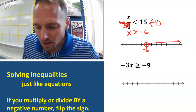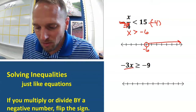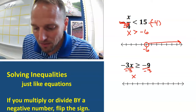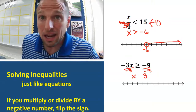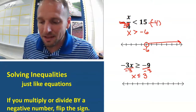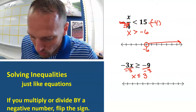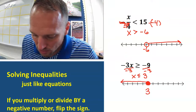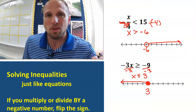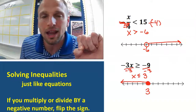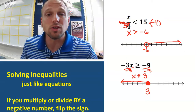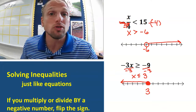Negative 3X is greater than or equal to negative 9. Divide both sides by negative 3: negative 9 divided by negative 3 is positive 3. But since we divided by a negative number, we flip the sign — so it becomes X is less than or equal to 3. Come to 3, filled-in circle, arrow pointing left. Remember: the key is the word 'by' — if you multiply or divide by a negative number, flip the sign. That's the only difference between solving an equation and solving an inequality.